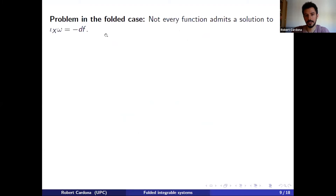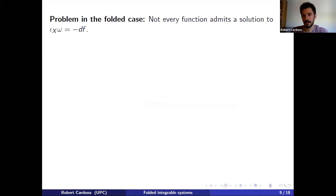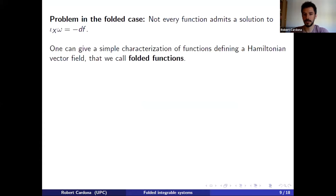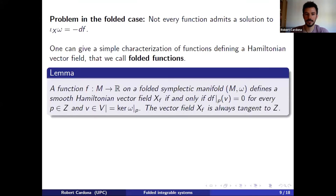What was not yet done in the folded case — as opposed to the b-symplectic case — is introducing Hamiltonian dynamics in a more general sense. A natural generalization of the toric actions would be some notion of integrable system. The main issue is that not every function defines a Hamiltonian vector field. The good thing is that it is rather easy to characterize those functions that do define a Hamiltonian vector field — we call these folded functions. A function is a folded function if and only if its differential vanishes along any section of the bundle V, the kernel of ω along Z.